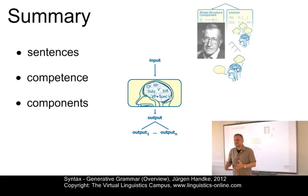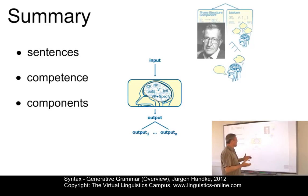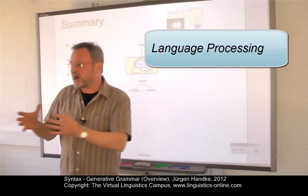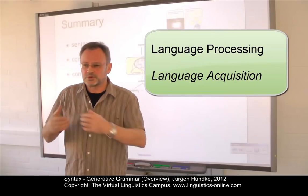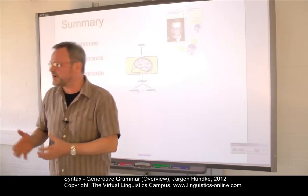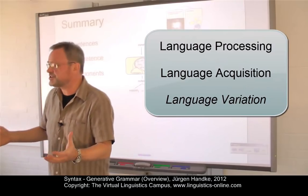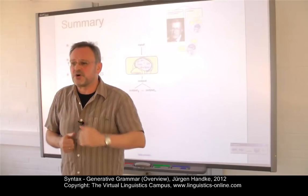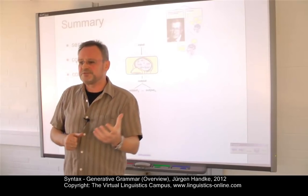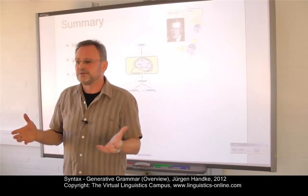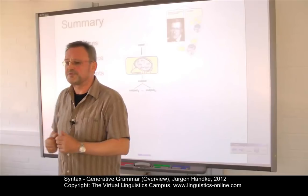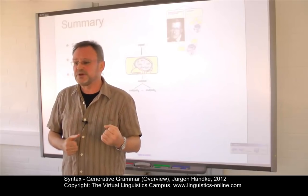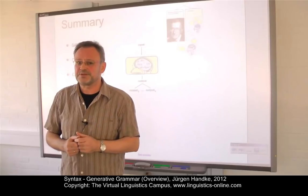Generative grammar not only provides a description of the structure of a language, but seeks to explain several phenomena: language processing — how do humans understand and produce speech; language acquisition — what goes on in an infant's mind when acquiring his or her mother tongue; and language variation — why do languages change and what is going on under the surface of variation. As a result, it seems plausible to claim that language is like an instinct — we acquire and use it subconsciously. The core of this process is what many linguists refer to as universal grammar, but that is an even more complicated story.